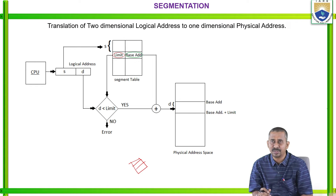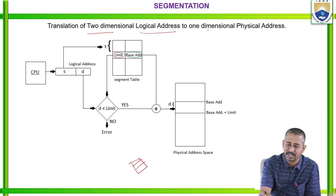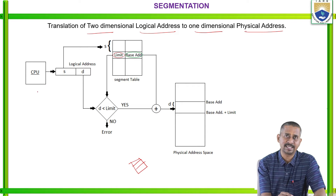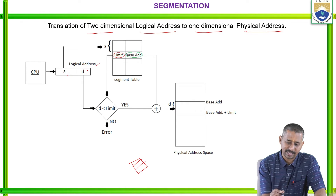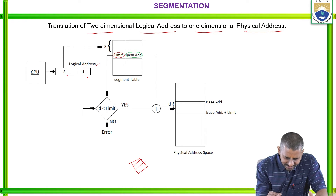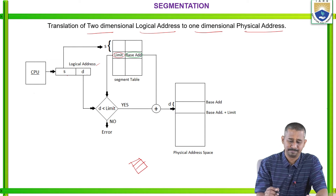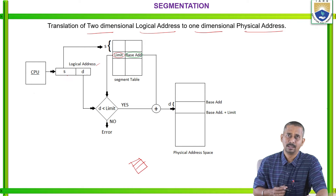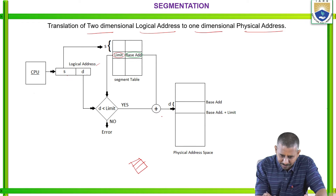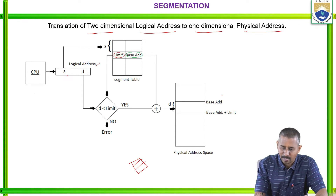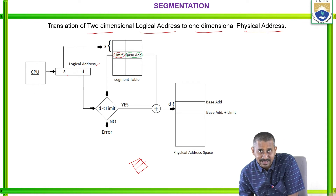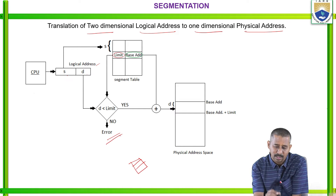Translation of two-dimensional logical address to one-dimensional physical address: every time the processor generates a logical address consisting of segment number and segment offset, the segment number acts as input to the segment table. If the offset d is less than the limit, it combines with an XOR operation to produce the displacement in physical address. If d is not less than the limit, that condition fails and an error is shown.